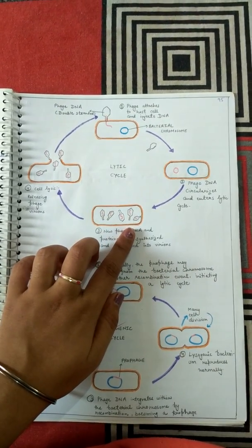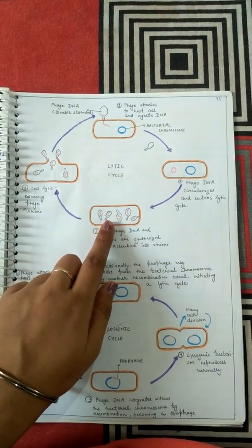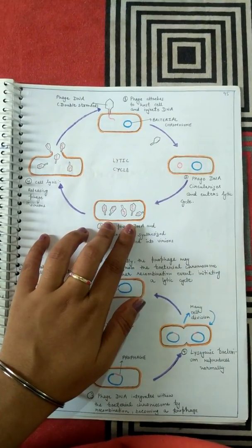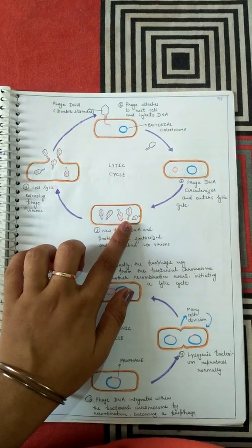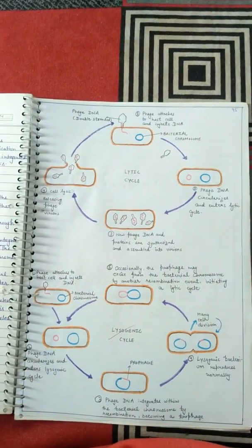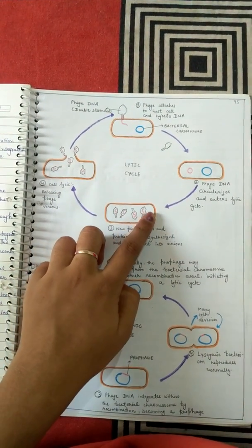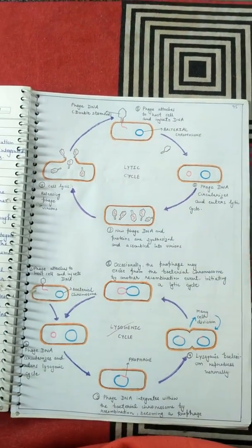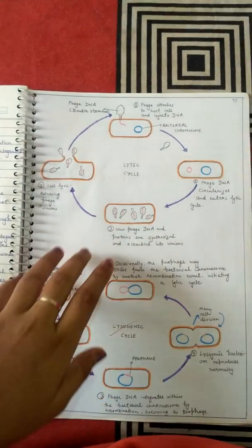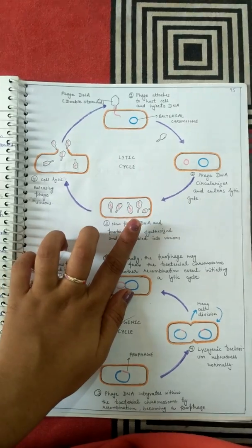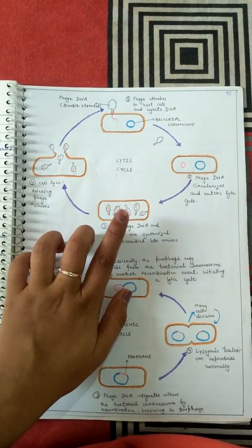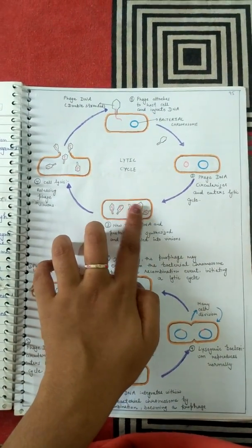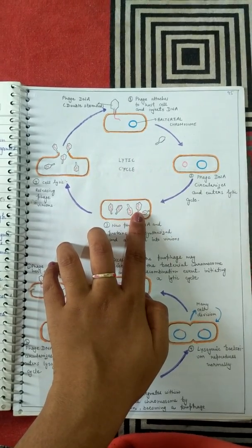In the third step, the bacteriophage DNA takes over the machinery of the host cell and makes its own proteins and enzymes. With the help of these proteins it makes its own protein coat. The bacteriophage multiplies itself and makes many copies — these are known as virions, because they are infectious particles with their own DNA encapsulated inside a protein coat made using bacterial machinery.